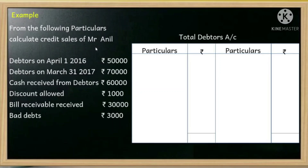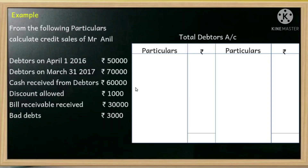A trader will calculate credit sales using the debtors account. Debtors as on April 1st, 2016: $50,000 — that is the opening balance of debtors. Debtors as on March 31st, 2017: $70,000. Closing balance of debtors: $50,000. Cash received from debtors: $50,000.